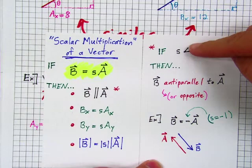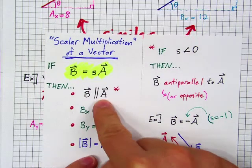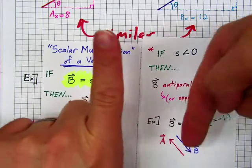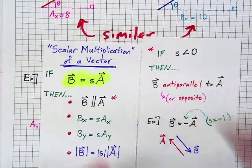If that scalar happens to be negative, then instead of b being parallel to a, we say b is anti-parallel to a. They are in opposite directions. We call that anti-parallel.